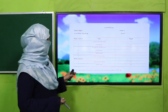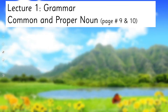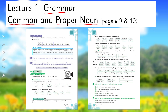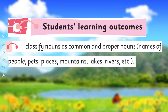In Lecture 1, under the title of Grammar, we will cover the topic of Common and Proper Nouns, covering page numbers 9 and 10 of the book. The SLO will be to classify nouns as common and proper nouns — names of people, places, mountains, lakes, rivers, etc.